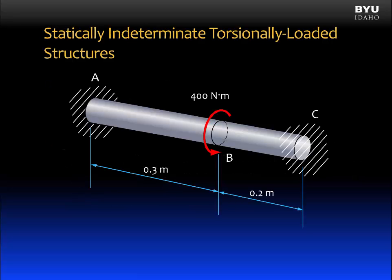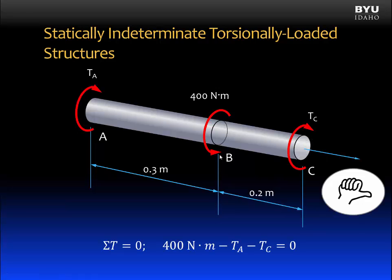Here's a statically indeterminate torsionally loaded member. There are walls at A and C to which the member is fixed, and a single torque applied at B. If we draw a free body diagram and sum the torques equal to zero, we get the following equation.